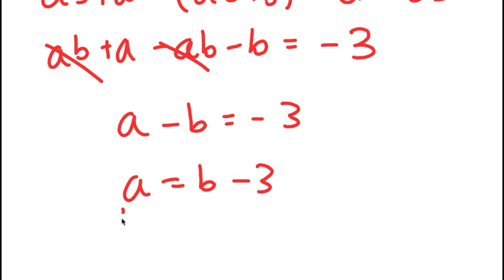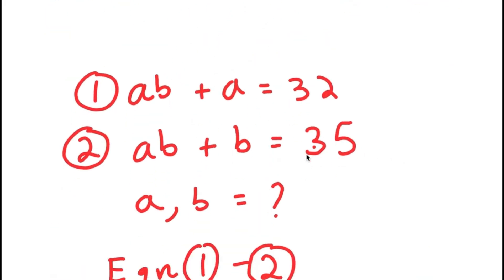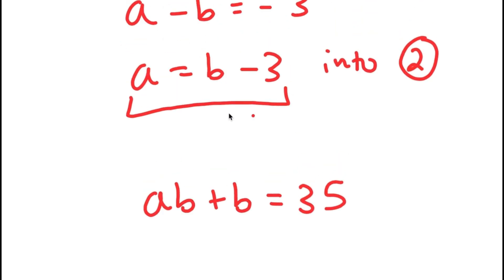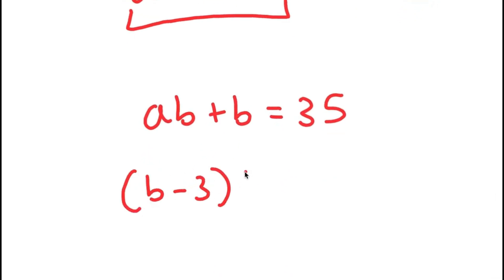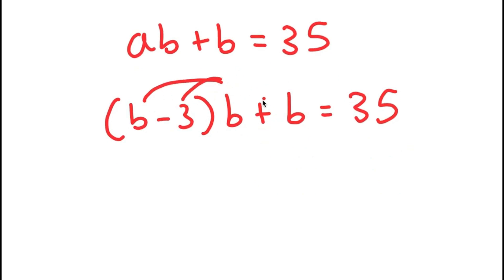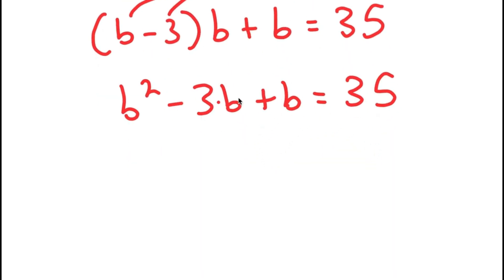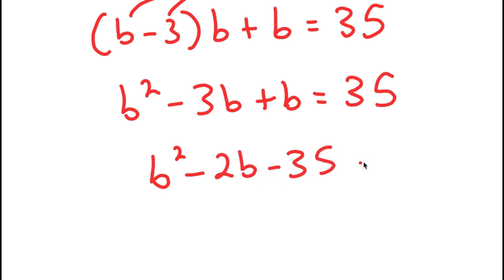Now I can substitute this value of A into equation 2, which is AB plus B equals 35. Plugging in A equals B minus 3, I get B minus 3 times B plus B is equal to 35, and now my only variable is B. Distributing: B squared minus 3B plus B equals 35. Combining like terms: B squared minus 2B equals 35, and subtracting 35 gives B squared minus 2B minus 35 equals zero.